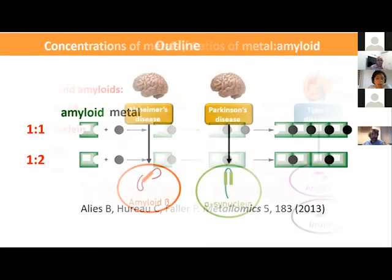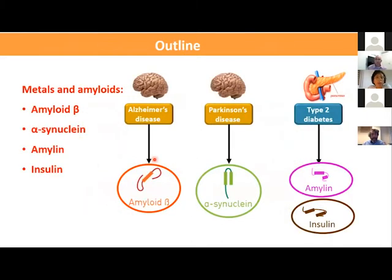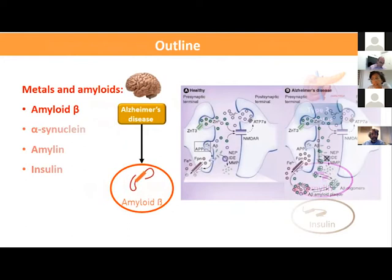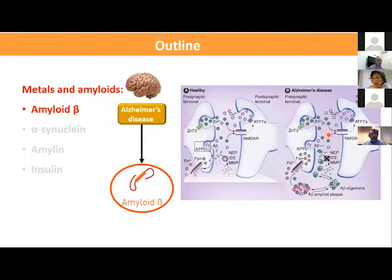I will briefly present our previous work on the effect of metals on A-beta, alpha-synuclein, and amylin, before focusing mainly on zinc ions and insulin fibrillation. Metals such as zinc ions and copper ions are concentrated in and around amyloid plaques in the Alzheimer's disease brain. It was suggested that zinc ions bind to amyloid beta and promote A-beta aggregation.